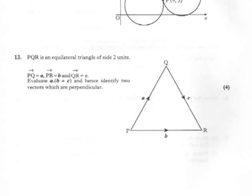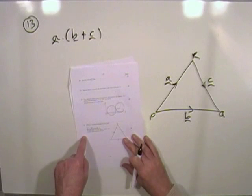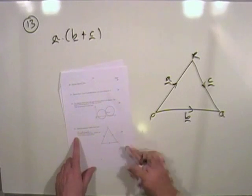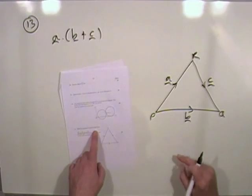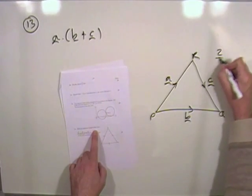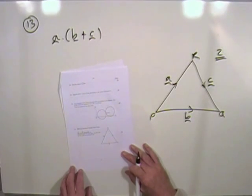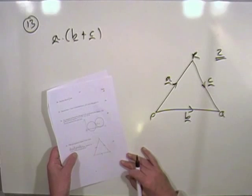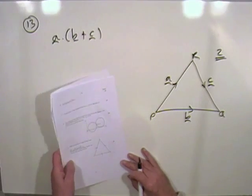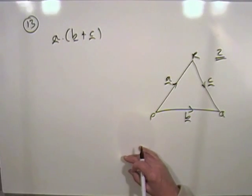And the last one here, number 13, the scalar product question. So pause and try it. Number 13 then, what we've got, PQR is an equilateral triangle of side 2, and that describes the directions of these vectors.